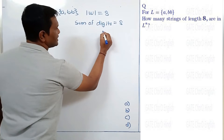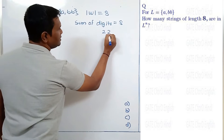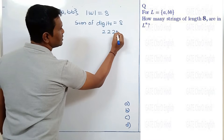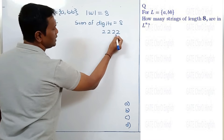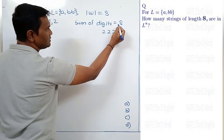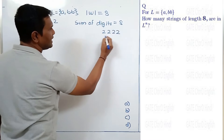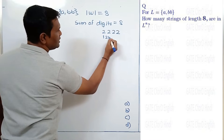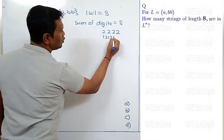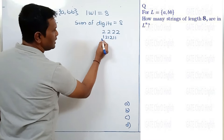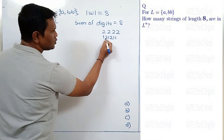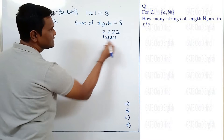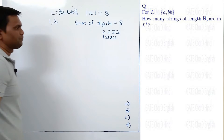For example, the number 2222 has a sum of digits equal to 8. Numbers like 121 and 211 also have a sum of digits equal to 8.